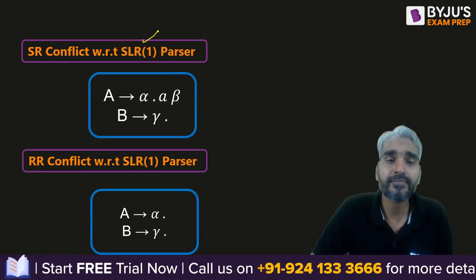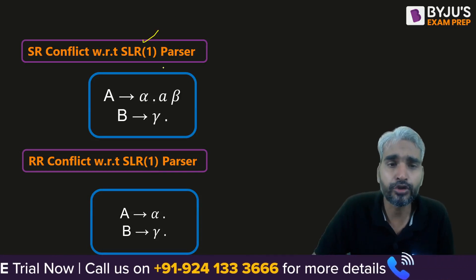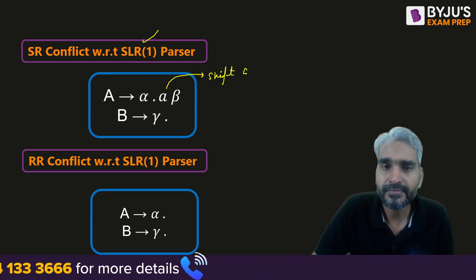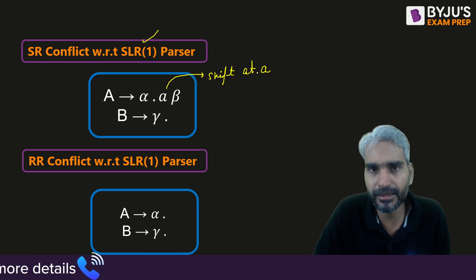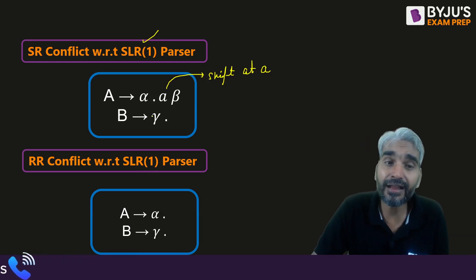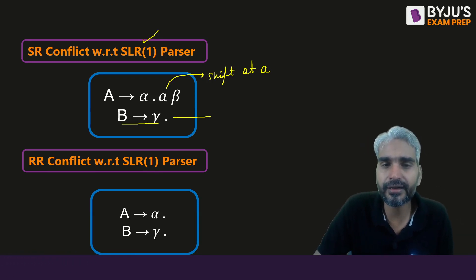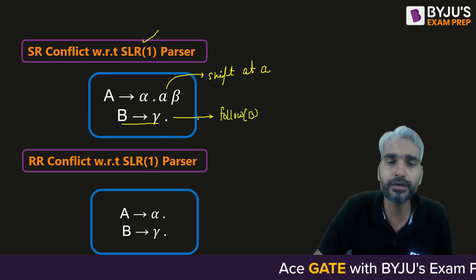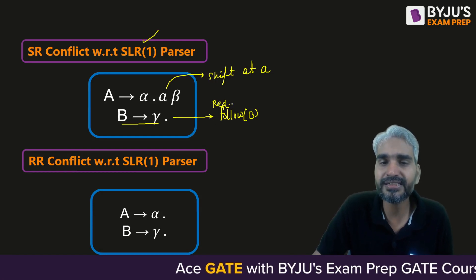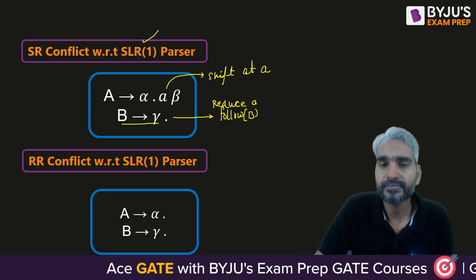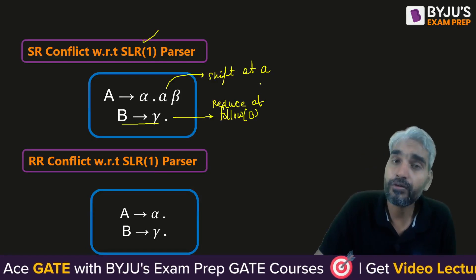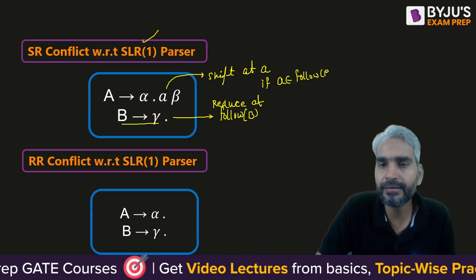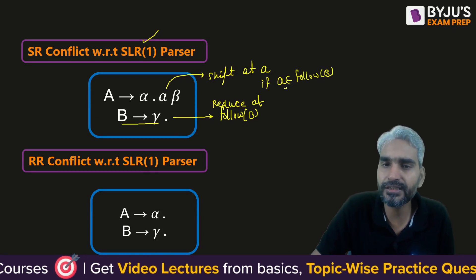SLR1 is comparatively more intelligent. There will be no change in the shift — shift will always be the same for all parsers. The only difference is how we place the reduce entry. In SLR1, we place the reduce entries of a reduced production corresponding to the non-terminal on the left-hand side of that production, at the terminals of FOLLOW of B.